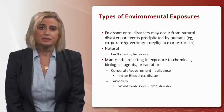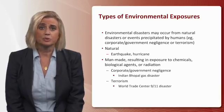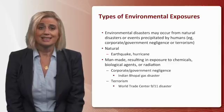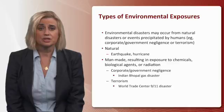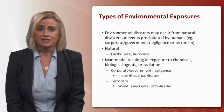There are several types of environmental exposures. They can occur from natural disasters or events precipitated by humans, such as terrorism or corporate or government negligence. Examples of natural disasters are things like earthquakes and hurricanes. Man-made disasters include the terrorist attacks that affected the World Trade Center on September 11th, and other events such as the Indian Bhopal gas disaster.